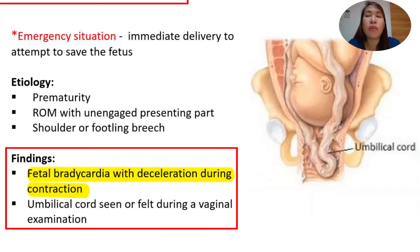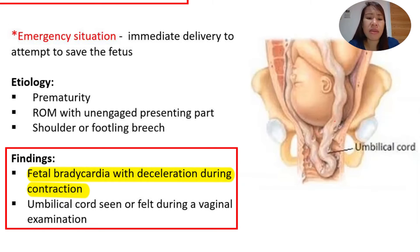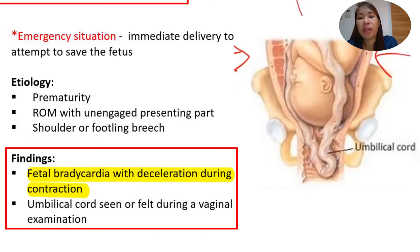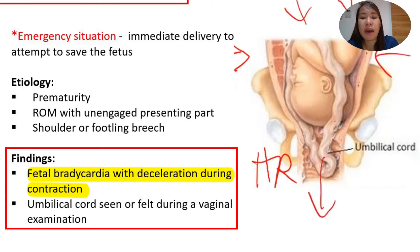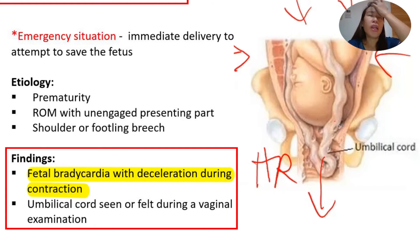In the OB ward or delivery room, if a doctor or OB nurse says 'brady, brady, brady' repeatedly, they are already panicking because the baby is being compromised. The baby may die if not delivered immediately. Deceleration means slowing — when the uterus contracts, the baby's heart rate drops. If we assess umbilical cord prolapse on internal examination, we must prepare for immediate delivery, and we cannot deliver via normal spontaneous delivery as it will further compress the cord. The delivery of choice is cesarean section.